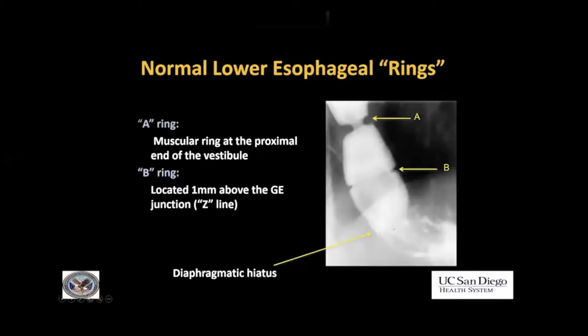The B-ring usually should be right at the diaphragmatic hiatus. You usually don't see it that well unless there's a hiatal hernia, like in this case. This whole area is hiatal hernia as the stomach is pulled up. We know the Z-line should be just below the B-ring, so all of this is stomach. You usually only see the B-ring this well when there's a hiatal hernia. Be aware that the diaphragmatic hiatus where the GE junction is normally located will be quite a bit below the diaphragm, because these images are always performed obliquely. So when performing these esophagrams, make sure you go low enough — don't stop at the diaphragm; go all the way down to the diaphragmatic hiatus.